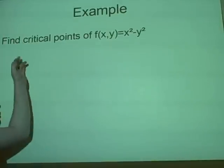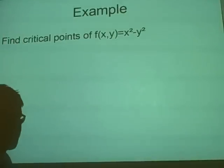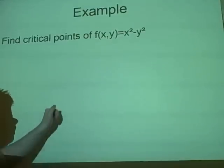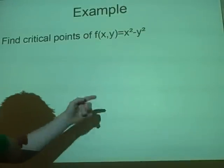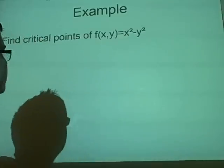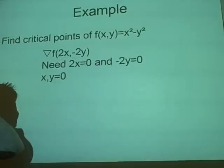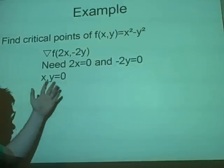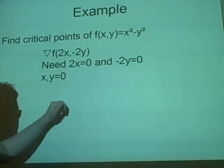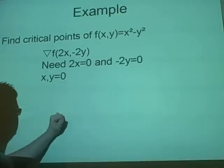So we have this: find the critical points of x² - y². Now first of all, what do we have to do? We have to differentiate with respect to x and then with respect to y to find the gradient function, which will give you this. Then we want these to equal zero. So we have this equals zero and this equals zero. So the only possible solution is that x and y are both equal to zero.